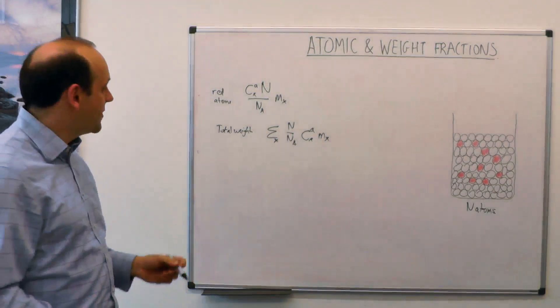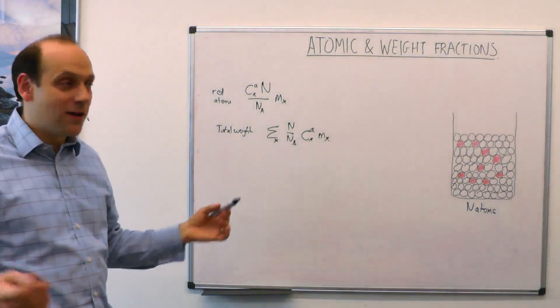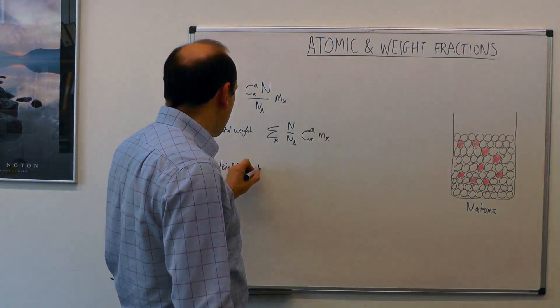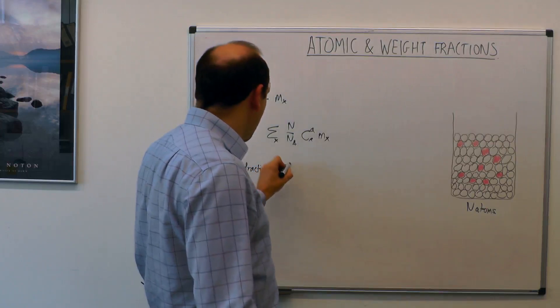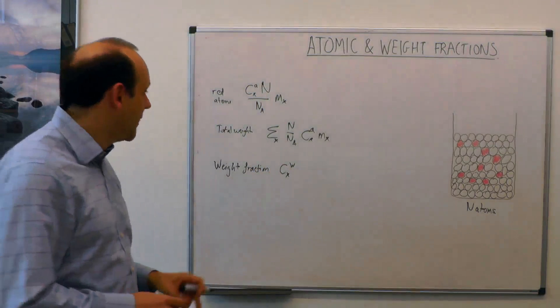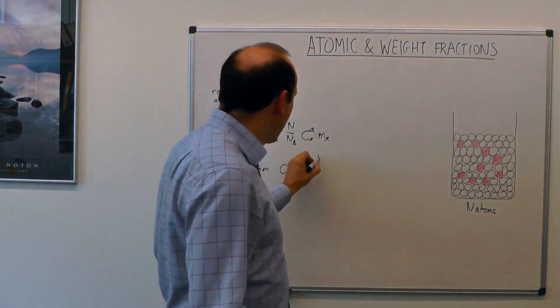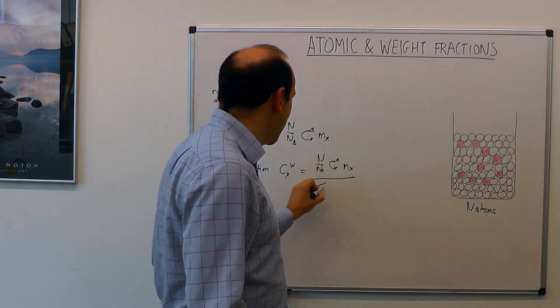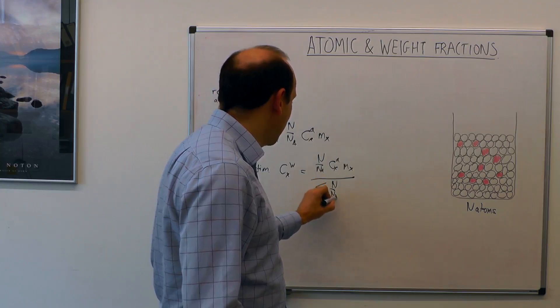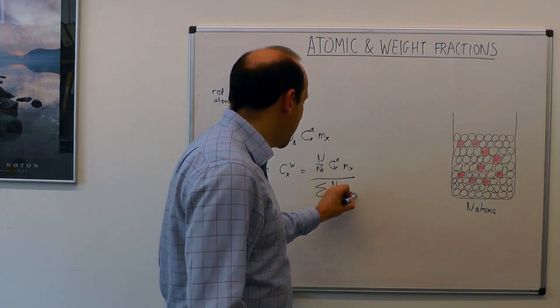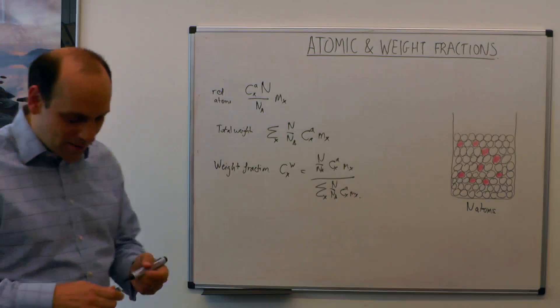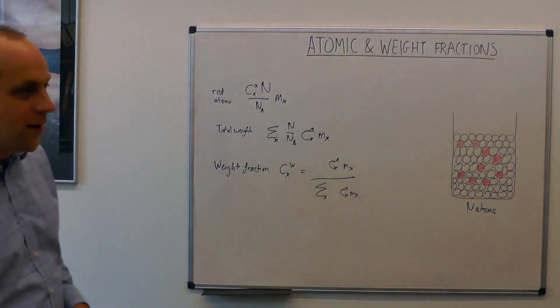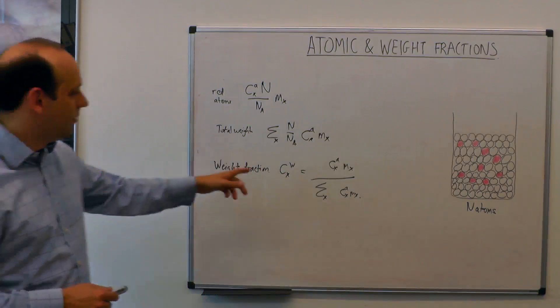If we want to know what the weight fraction of red atoms is, we just divide this one by this one, and that would give us our weight fraction. So we do n over na times c x a molar mass of x divided by the sum over all the possible species x of n over na c a of each species x times the molar mass. You can see immediately that we're going to cancel out the n over na, and that just gives us our final formula. That's the weight fraction from the atom fractions.